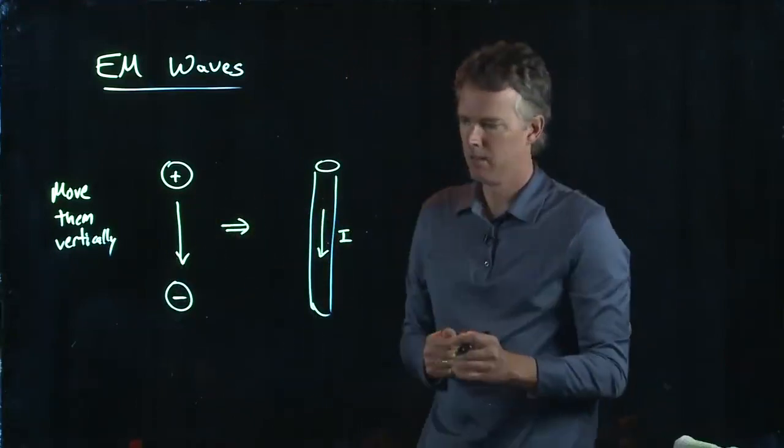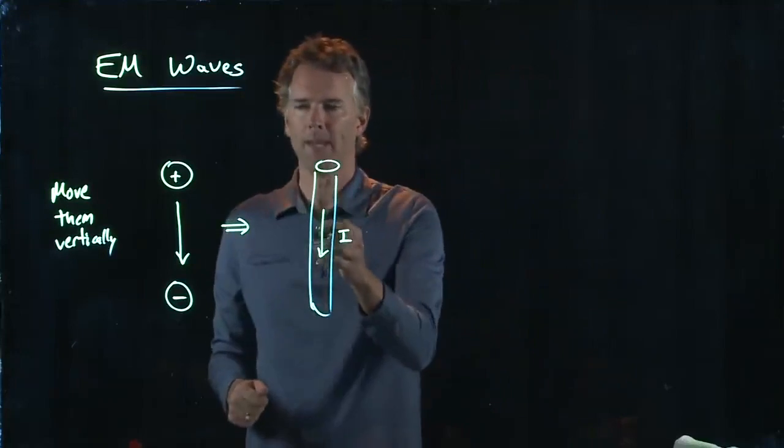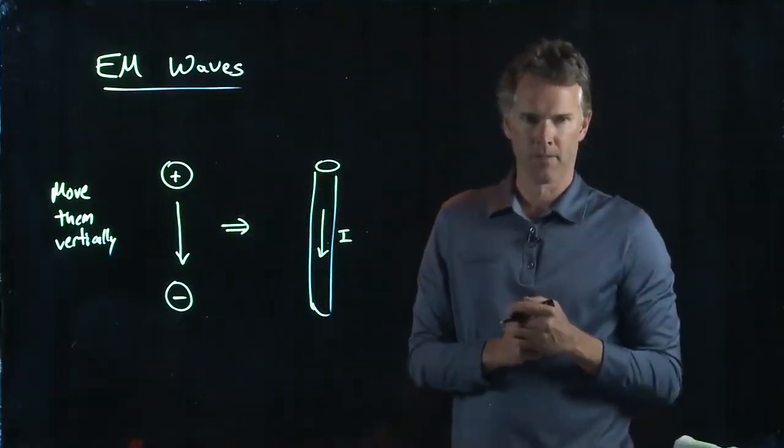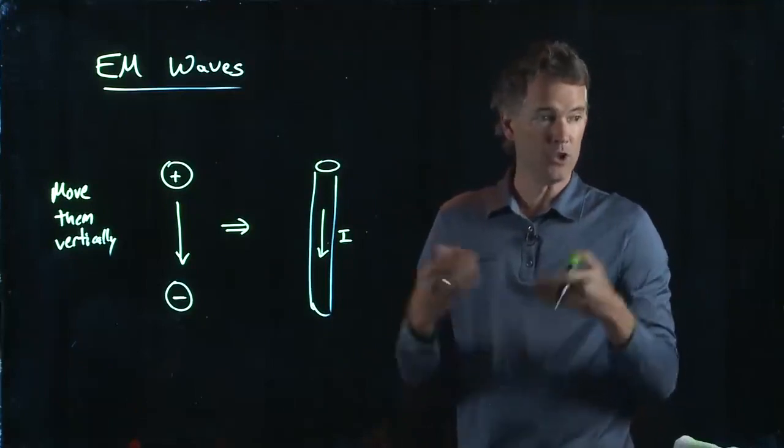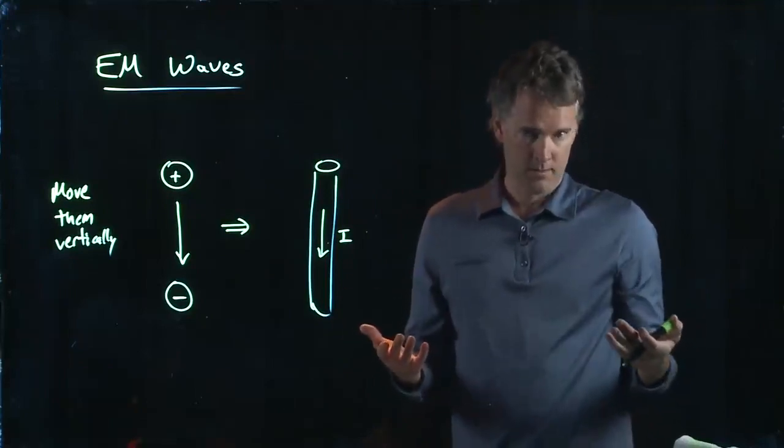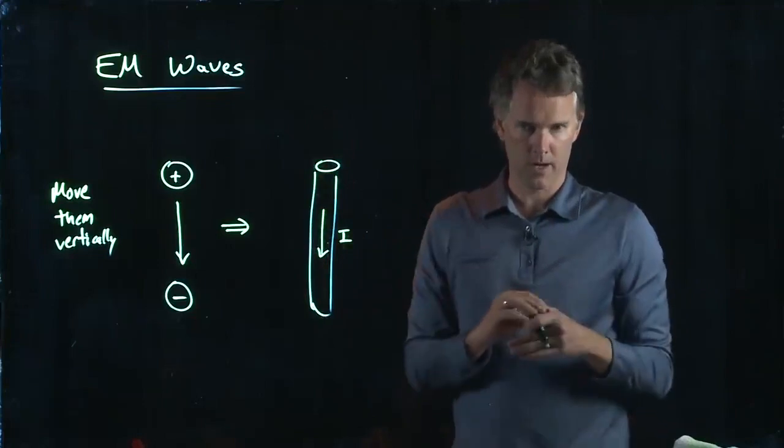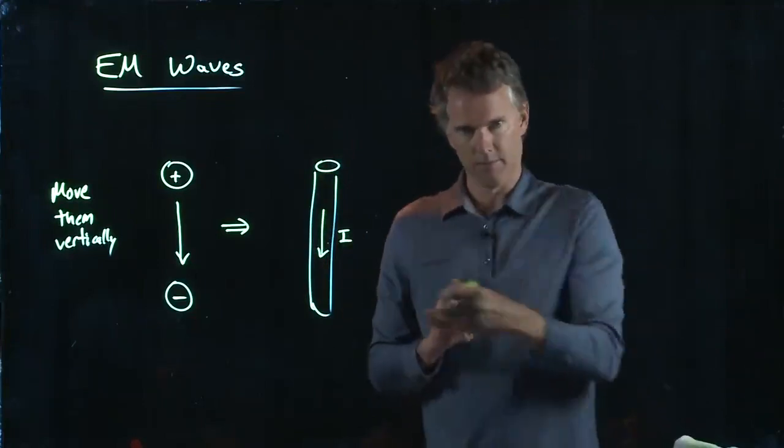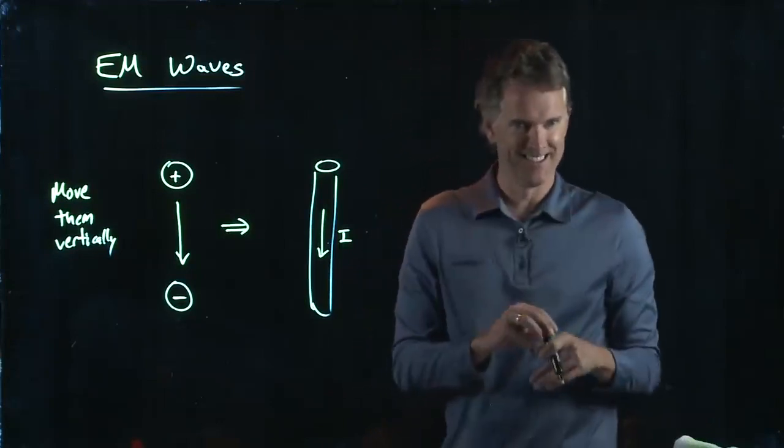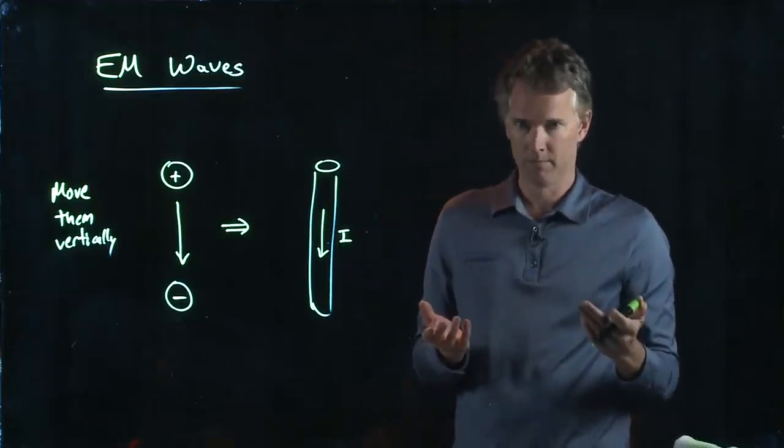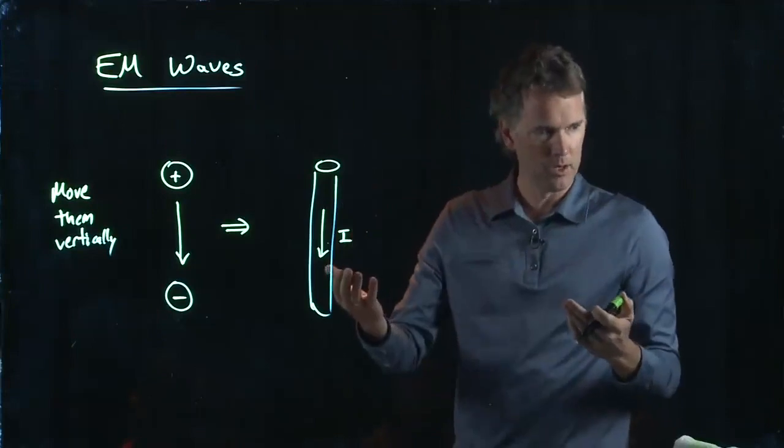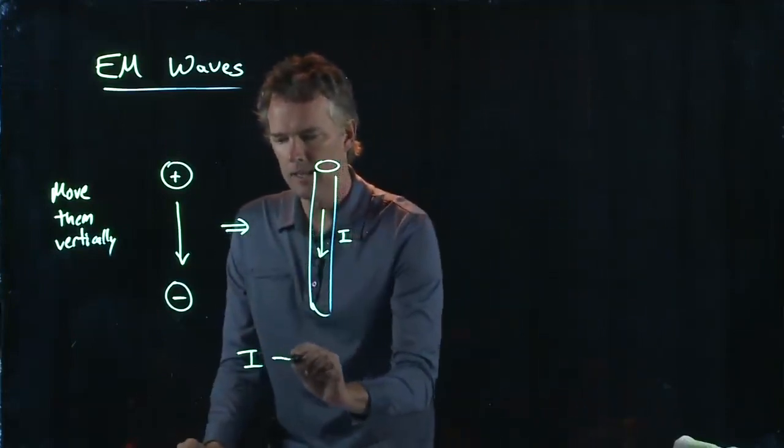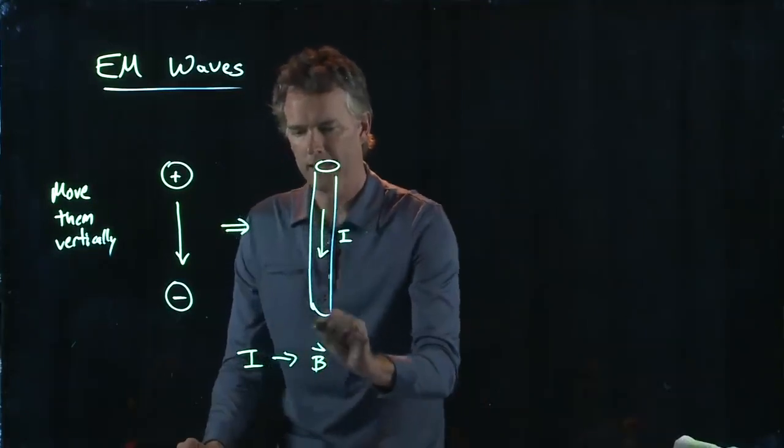But we know what happens when we have current. What do we generate when we have current in a wire? It was the title of a couple chapters ago. Magnetic fields, right? If we have current, we have magnetic fields. I leads to magnetic fields B.